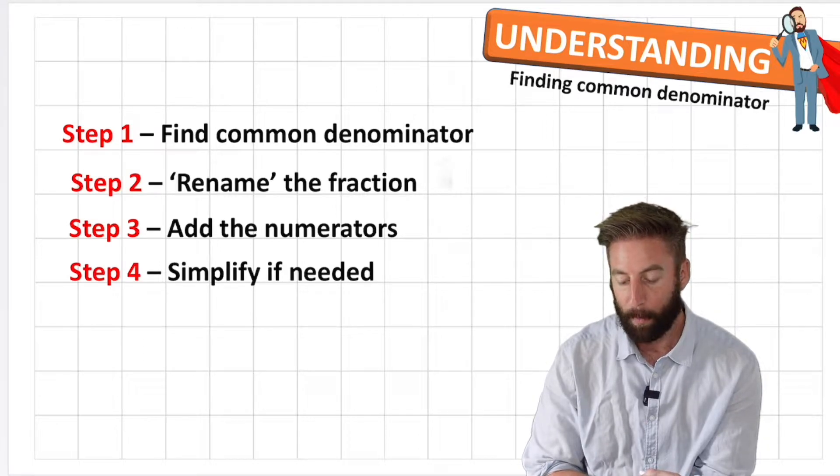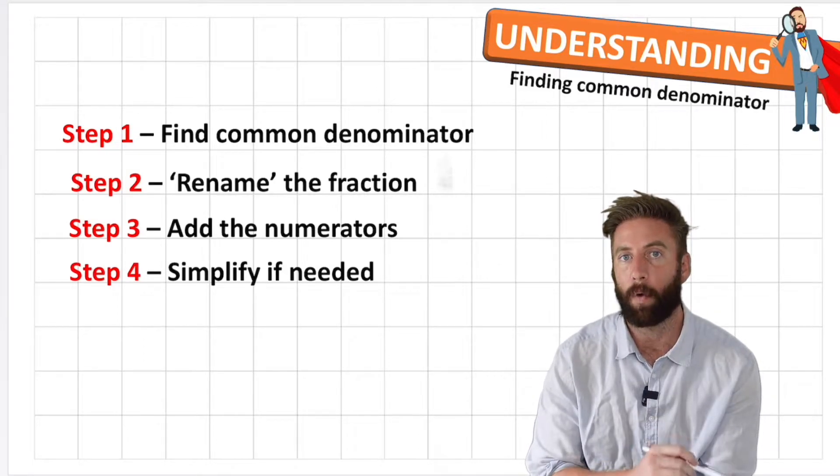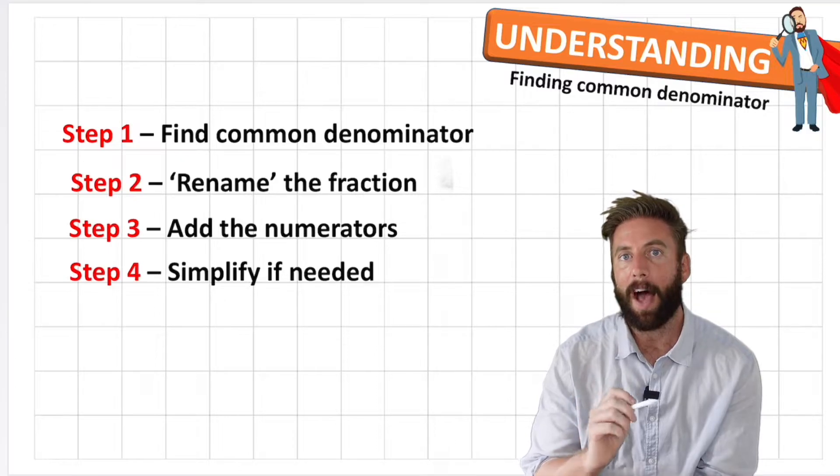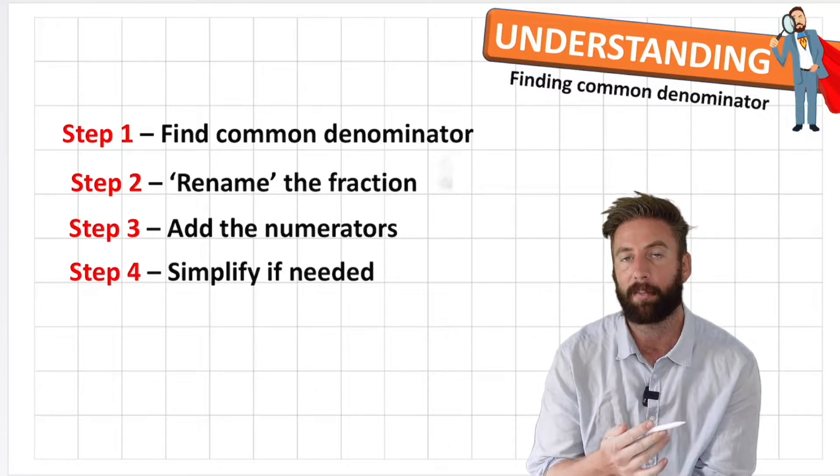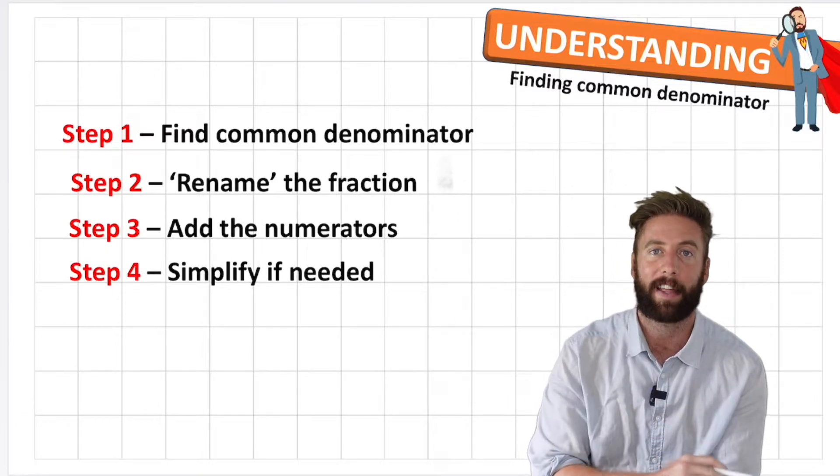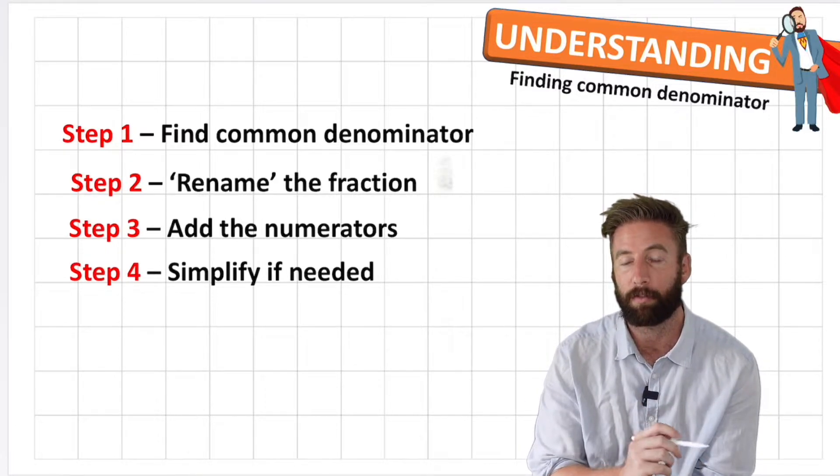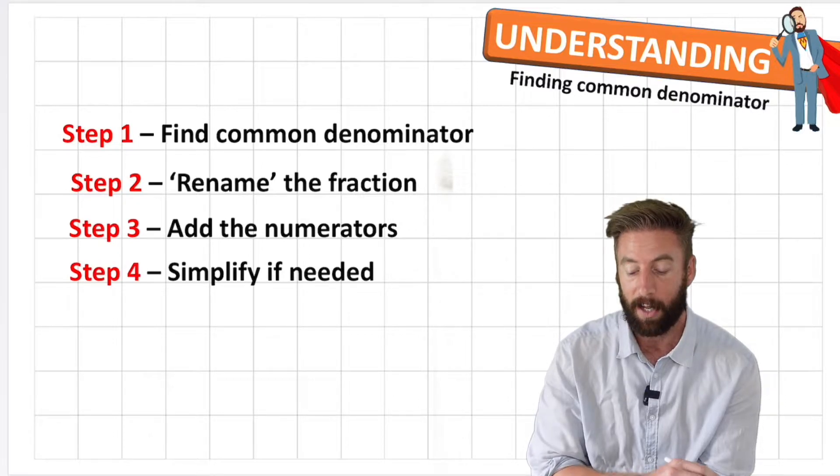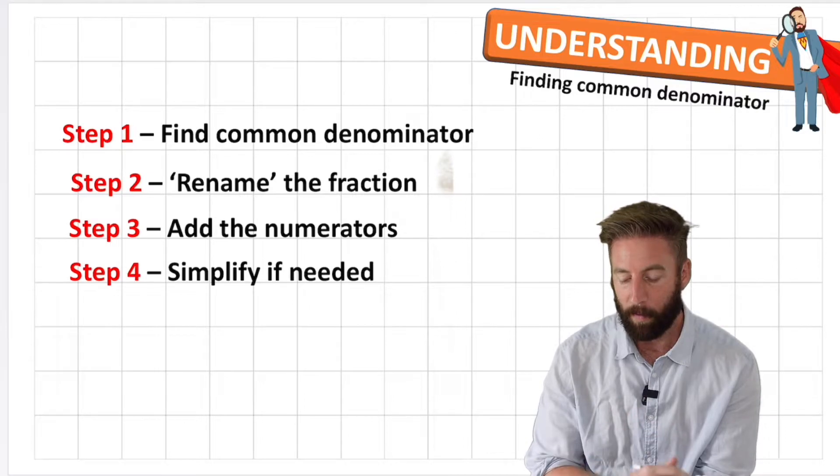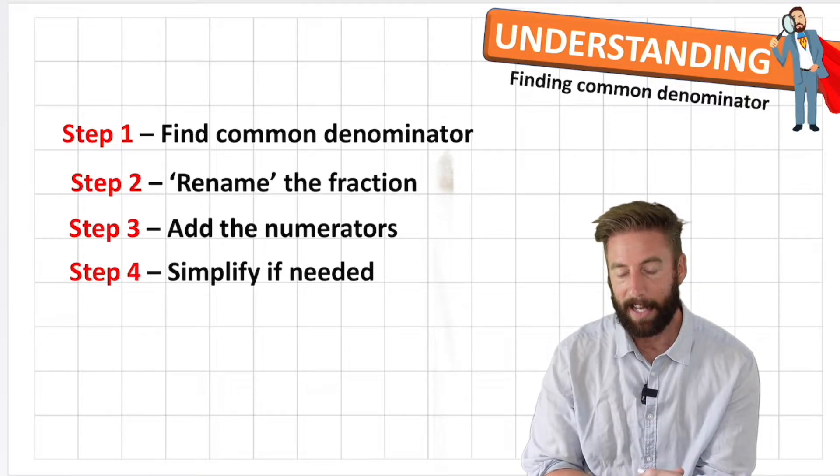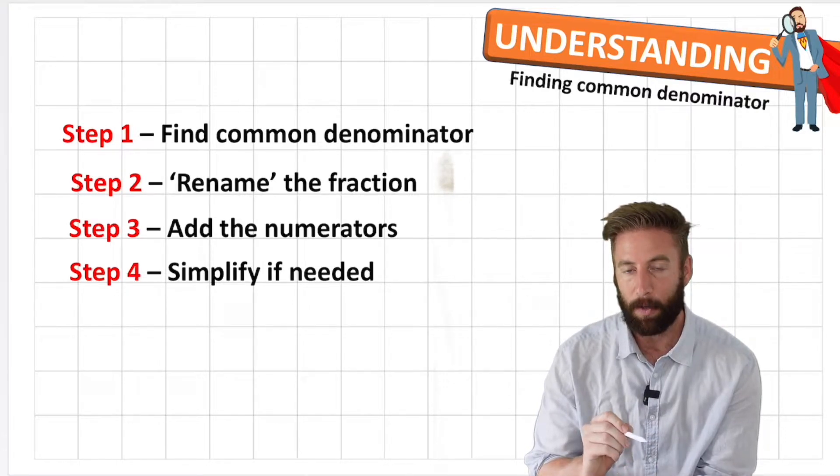Step one says find a common denominator so we're going to be looking at equivalent fractions. If you haven't checked out my previous video on equivalent fractions or don't have a good understanding of equivalent fractions, press pause on this video, go check that out and then come back to this because equivalent fractions is something we're going to really need to understand before we can move on. Then I need to rename the fraction into my new equivalent, add the numerators and simplify if needed.